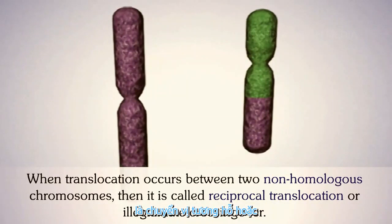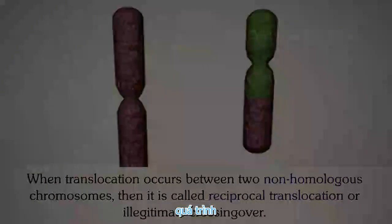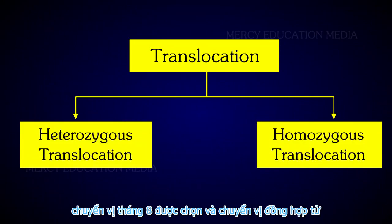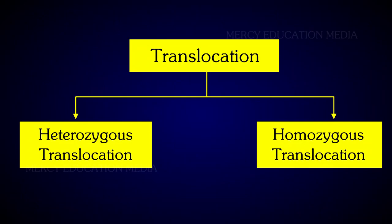When translocation occurs between two non-homologous chromosomes, then it is called reciprocal translocation or illegitimate crossing over. The translocation is divided into heterozygous translocation and homozygous translocation.